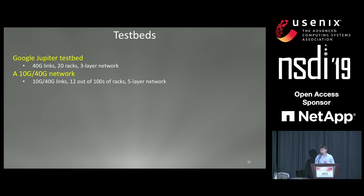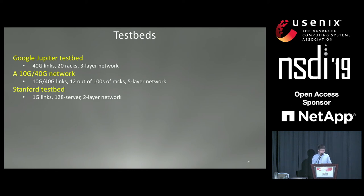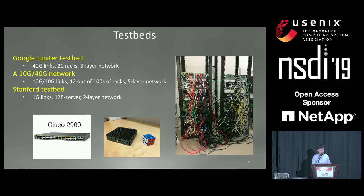We have deployed and tested this system in several environments. First, in a Google Jupiter 40G testbed using 20 racks and a three-layer network. Also in a much larger network with 10G and 40G links, where we had access to 12 out of hundreds of racks in a five-layer network. At Stanford, we built a small testbed using bottom-of-the-line Cisco switches and dongles bought off the internet as servers — a 128-server two-layer 1G testbed — to show that if we can do reconstruction in this minimal setup, we can do it anywhere.